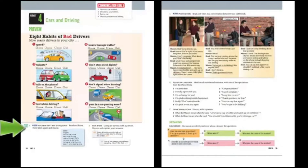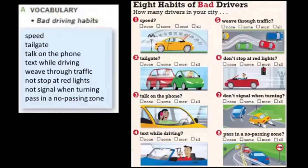Page 38, Exercise A. Vocabulary: Bad driving habits. Read and listen. Speed. Tailgate. Talk on the phone. Text while driving. Weave through traffic. Not stop at red lights. Not signal when turning. Pass in a no-passing zone.